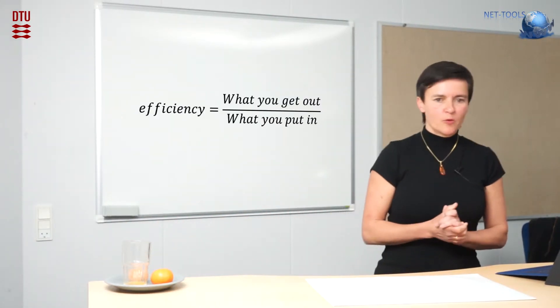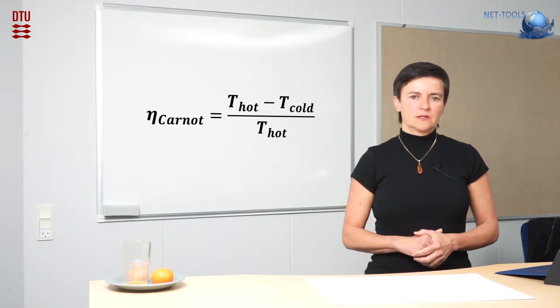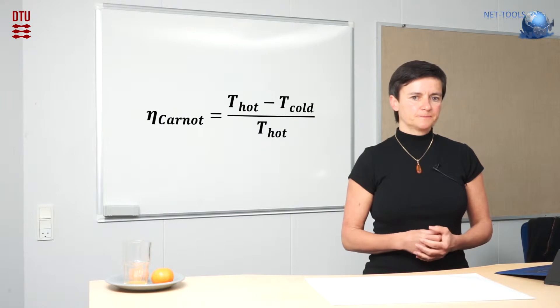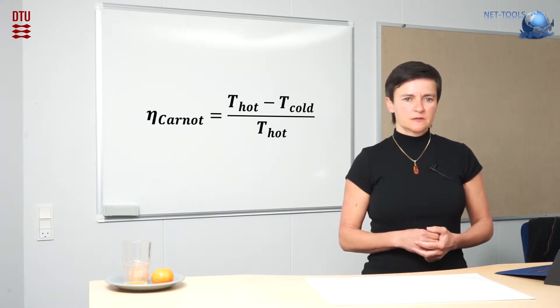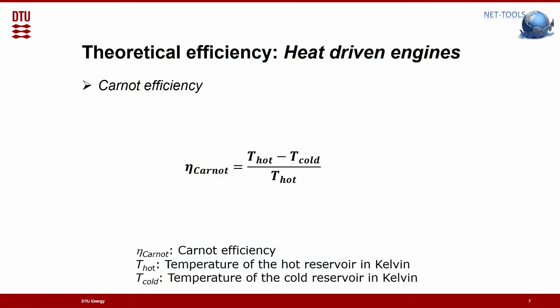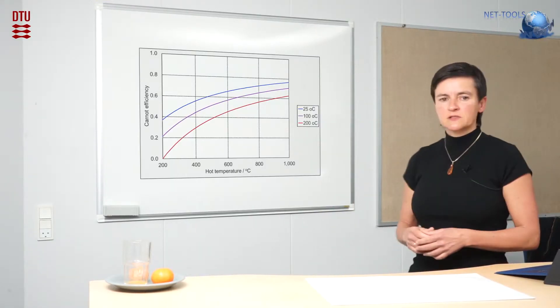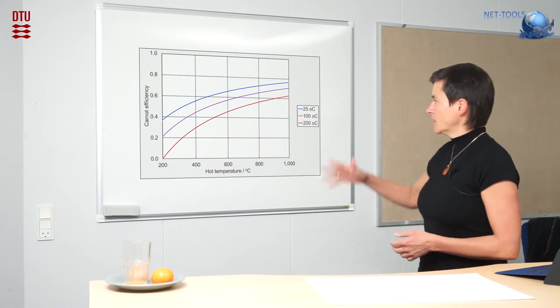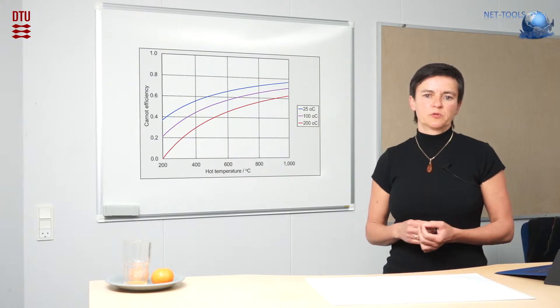In more quantitative terms, we often use heat-driven engines as a benchmark for fuel cells. The efficiency of a heat-driven engine is expressed by the Carnot efficiency and depends on the difference between the hot and cold temperature as expressed in this equation. When you plot this Carnot efficiency versus temperature, there are three curves here representing three cases for the cold temperature: one when the cold temperature is 25 degrees, one for 100, and one for 200 degrees centigrade.